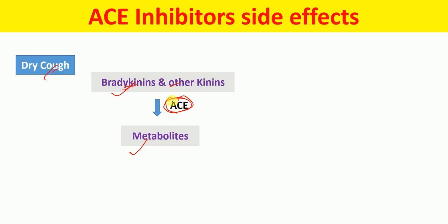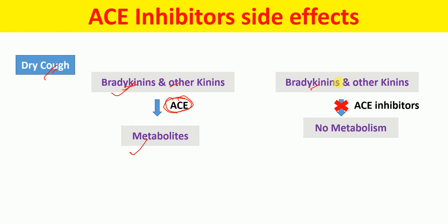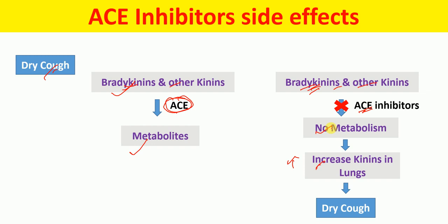When ACE is inhibited, bradykinins and other kinins will not be metabolized because ACE inhibitors block this enzyme. Their amounts will therefore increase in the lungs, and that causes irritation of the bronchi, which leads to dry cough. So ACE inhibitors block the ACE enzyme, which is responsible for the metabolism of bradykinins and other kinins — their levels increase in the lungs, causing bronchial irritation and dry cough.